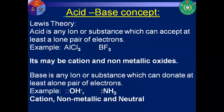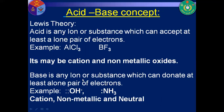Lewis concept: acid is any substance or ion which can accept a lone pair of electrons. For example, aluminium fluoride and boron trifluoride have vacant space in the outermost energy level which accepts lone pairs of electrons. It may be a cation or non-metallic oxide. Base is any ion or substance which can donate a lone pair of electrons. It is non-metallic and a neutral compound.